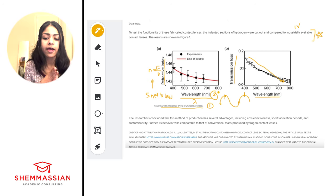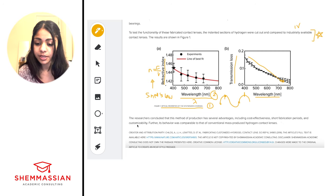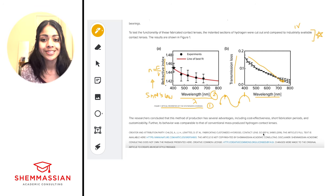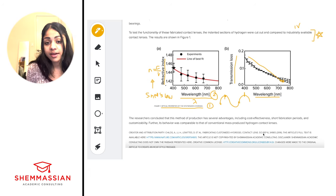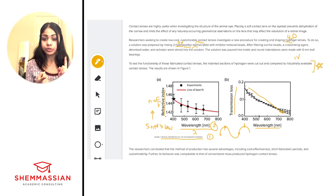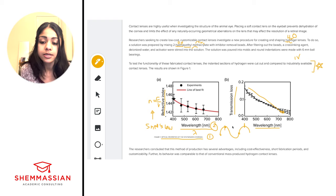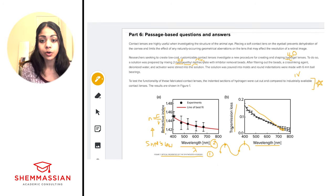The researchers concluded that this method of production has several advantages including cost-effectiveness, short fabrication periods, and customizability, and that its behavior was comparable to conventional mass-produced hydrogel contact lenses. When reviewing a figure, focus on the title, axes, variables, and general trend. The key physics themes here are lenses, optics, light wavelength, and the relationships between wavelength, refractive index, and speed.